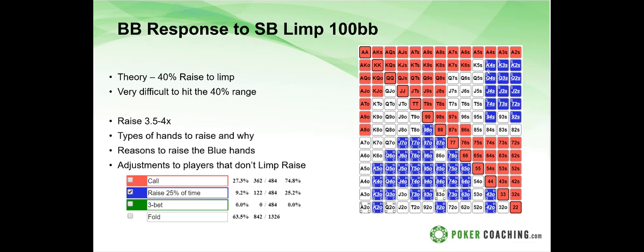This brings us to another counter-exploit: when you're in the big blind against a small blind limp, people in the big blind do not iso-raise enough. These are all heads-up pots between the small blind and big blind. The exploit when in the big blind is that players are not iso-raising enough to three and a half to four times the big blind. These are the types of hands you need to raise to punish the small blind, so they can't play all 90 percent of their limping range for free.